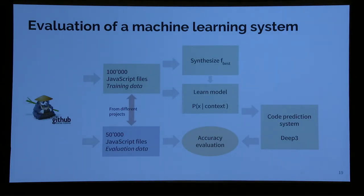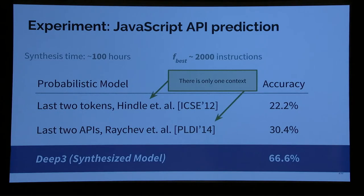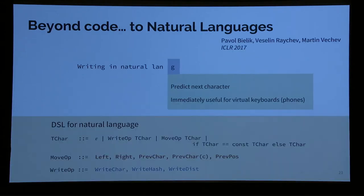The system works as follows: we have training data, two steps — first synthesis, then we learn a model that counts how many times we have a prediction given a context. We generated this system on the whole training data, then evaluate on separate public data. There are already a bunch of papers trying to improve on our results. The synthesis does much better than manually specifying contexts like 'condition on the last two tokens' or 'the last two APIs.'